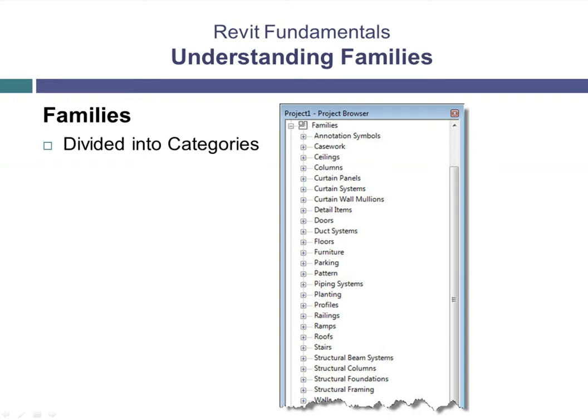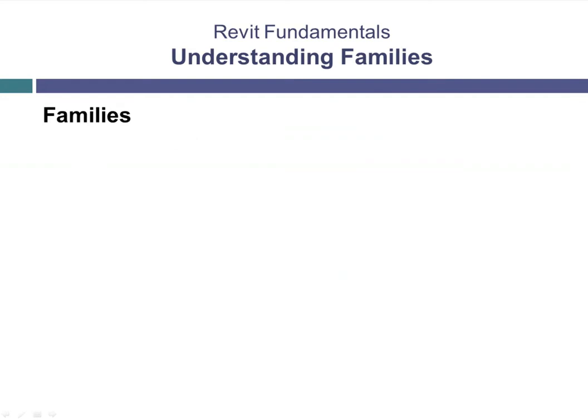Categories cannot be created or deleted, and are important in determining the visibility of elements. Each family in Revit belongs to one of these predefined categories. There can be many families within a given category.